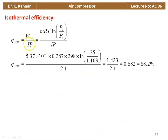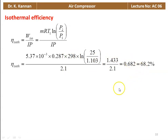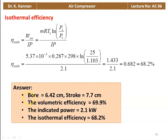Isothermal efficiency equals isothermal work divided by indicated power. Isothermal work equals M into R into T1 into logarithm of (P2 by P1). Substituting: 5.37 times 10 to the power minus 3 into 0.287 into 298 into ln(25 by 1.013) equals 1.433 kW. Divided by 2.1 equals 0.682, so isothermal efficiency is 68.2%. Answer: bore 6.42 cm, stroke 7.7 cm, volumetric efficiency 69.9%, indicated power 2.1 kW, isothermal efficiency 68.2%.